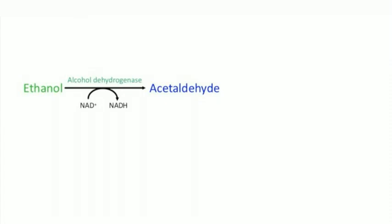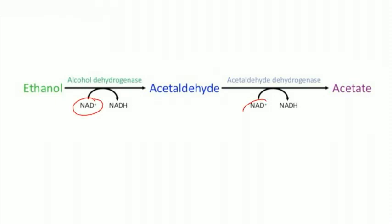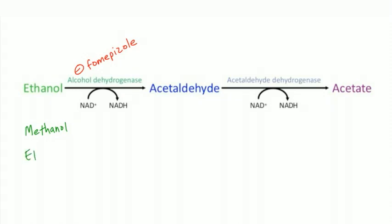Now let's talk about ethanol metabolism. The liver is primarily responsible. Two key enzymes: alcohol dehydrogenase converts ethanol to acetaldehyde, and acetaldehyde dehydrogenase converts acetaldehyde to acetate. Both are dehydrogenases that remove hydrogen ions and transfer them to NAD — the active form of niacin. NAD is the cofactor and the limiting reagent in alcohol metabolism. The drug fomepizole inhibits alcohol dehydrogenase, and disulfiram inhibits acetaldehyde dehydrogenase.